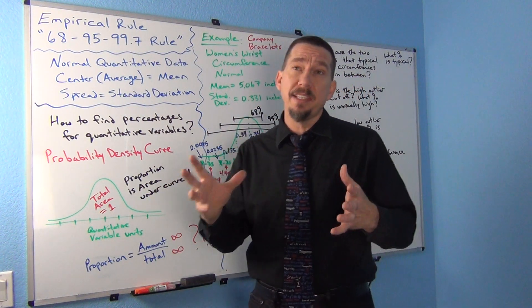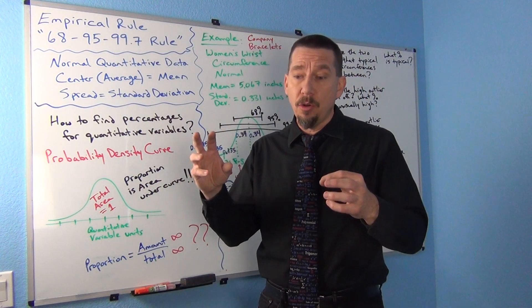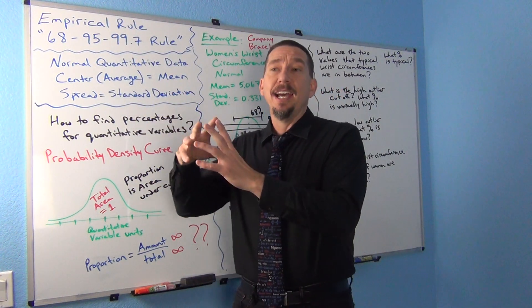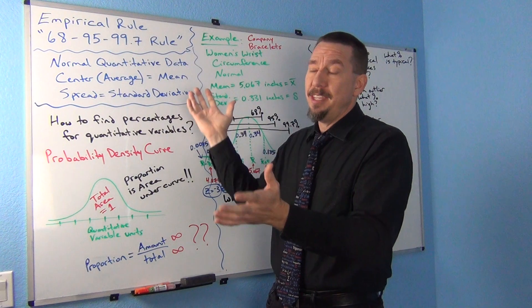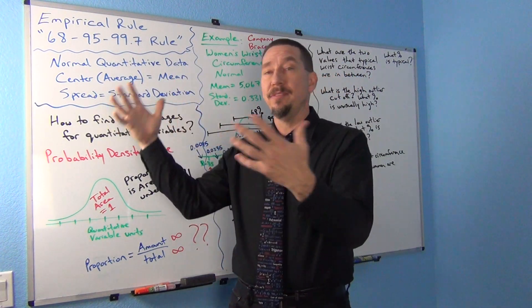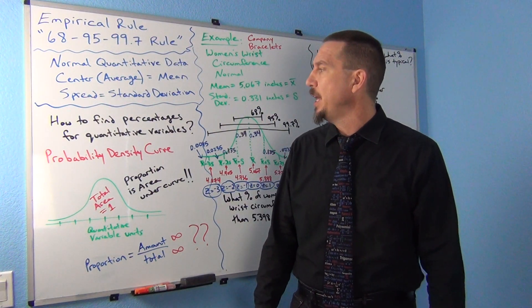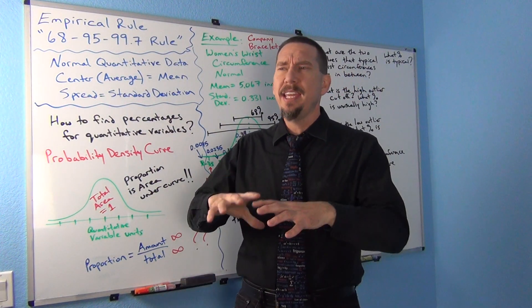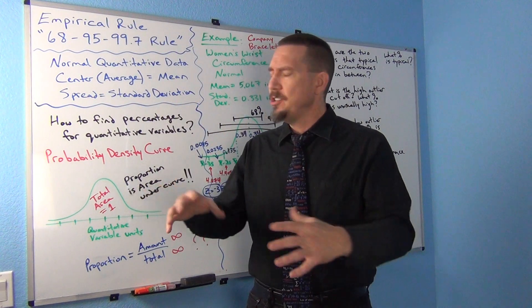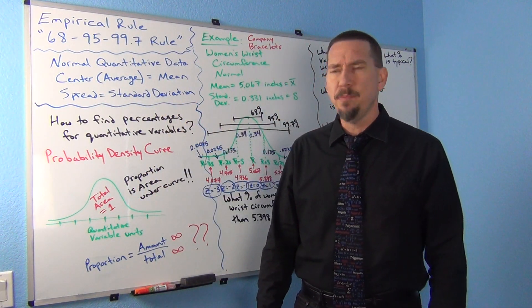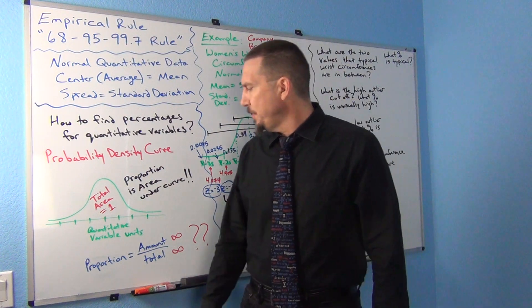Now if you're just dealing with sample data you might say, this many people in my sample data had a height of 69 inches or taller out of the total. So I could figure out at least a sample percentage that way. But if you're dealing with populations and you're dealing with sort of theoretical, theoretically what would that percentage be, it makes it very difficult.